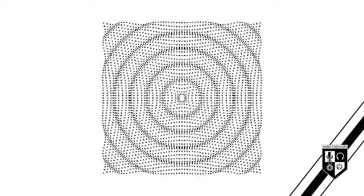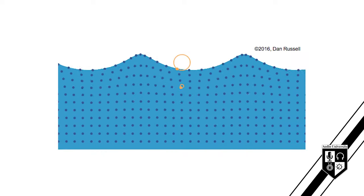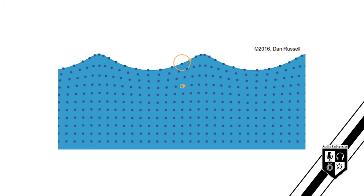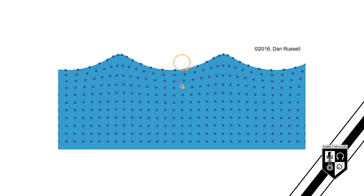Imagine a pebble dropped into a pond. The pebble hits the surface of the water and forces it downward. The water then rebounds upward, creating ripples of concentric circles that radiate outward. This animation shows the same ripples across the surface of the water from a side view — each downward movement is followed by an upward movement. A very similar thing happens as sound travels through air.